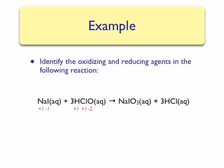On the product side, sodium iodate is an ionic compound, so sodium gets a plus one charge. The oxygens must be minus two since there is no peroxide. For all oxidation numbers to add up to zero, iodine must have a plus five oxidation number. For hydrochloric acid, a binary acid, hydrogen has a plus one oxidation state and chlorine has a minus one oxidation state.